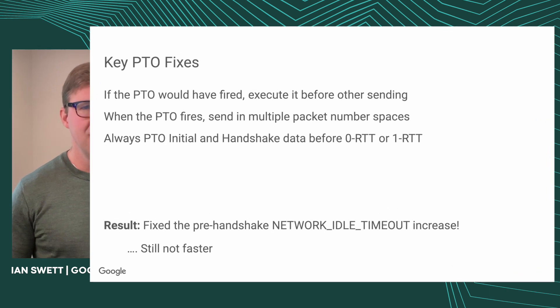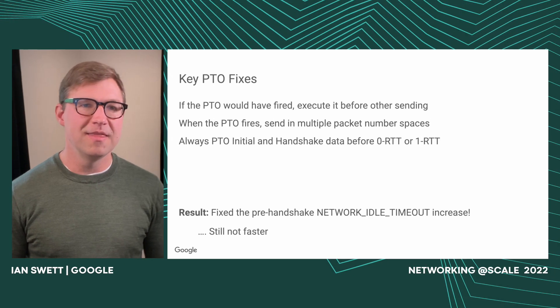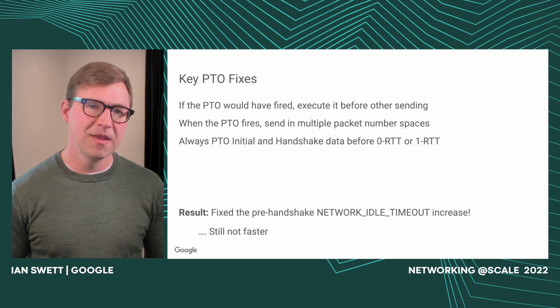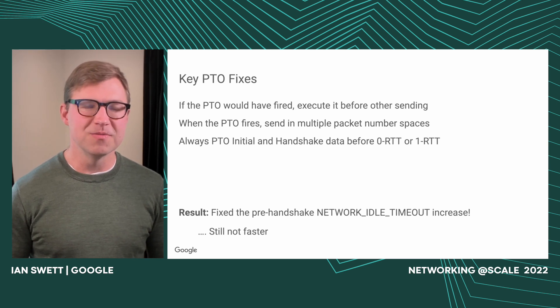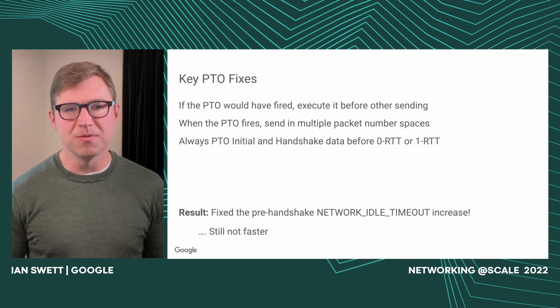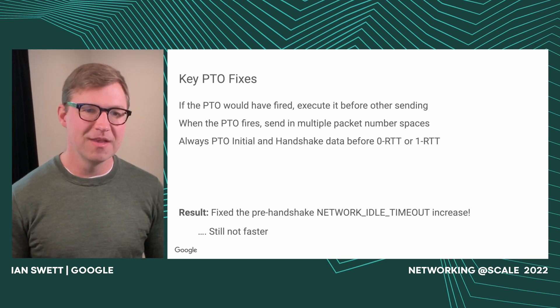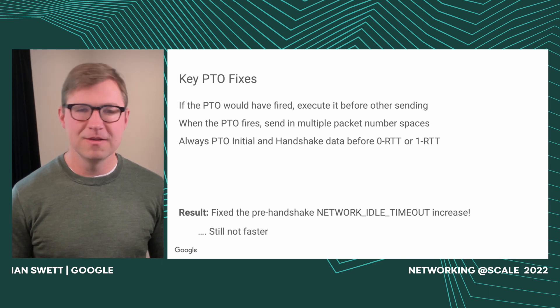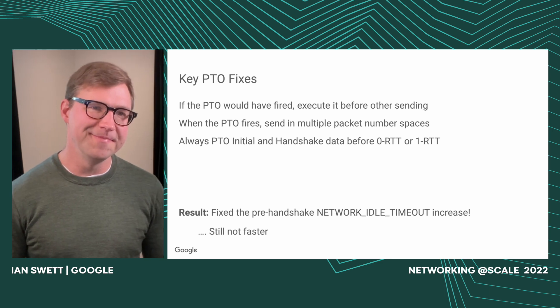Here are some key fixes. If the probe timeout would have fired, make sure to execute it before sending new data. When the probe timeout fires, send in multiple packet number spaces — that means even if you're not sure which keys the peer has, you'll get some feedback and be able to make forward progress on the handshake. Always probe timeout initial and handshake data before 0-RTT and 1-RTT data — don't fill up the entire amplification factor with application data when you should be making sure the handshake completes. The result is it fixed all the pre-handshake timeline increase, however it was still not faster than the control experiment without 0-RTT.